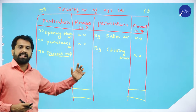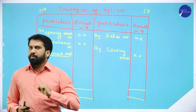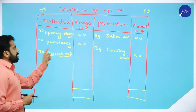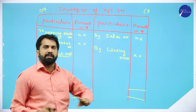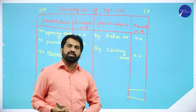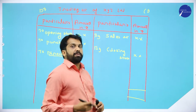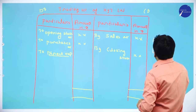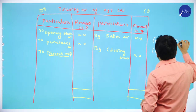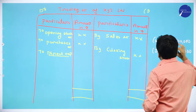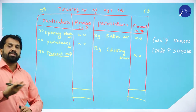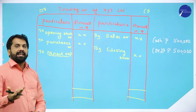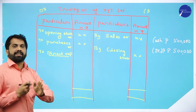In this format, you will get small adjustments. Opening stock — you will not get any adjustment; they will give it directly. Purchases, however, may have adjustments. They may give you cash purchases and credit purchases separately — for example, cash purchase 5 lakh and credit purchase 5 lakh. In that case, add both: 5 plus 5 equals 10 lakh as your total purchases. Cash and credit together must be considered as purchases.